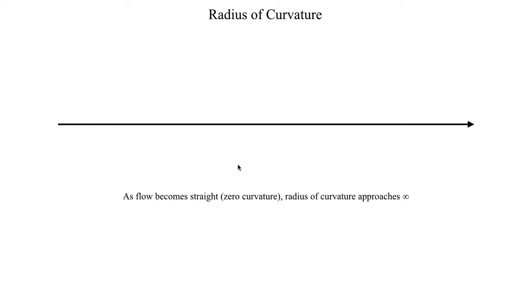Let's consider the extreme case: a perfectly straight trajectory with no curvature at all. If we were to draw a circle to fit this straight flow pattern, we would draw a circle that has an infinite radius. Only when a circle is very, very large do things start to look straight. That's actually one reason why the Earth was thought to be flat — it's a massive spherical object, so everything looks straight and flat, but it does have very gradual curvature. So a circle with an infinite radius gives you a perfectly straight flow pattern, and for a straight path we don't expect any centrifugal force, since centrifugal force requires some curvature.